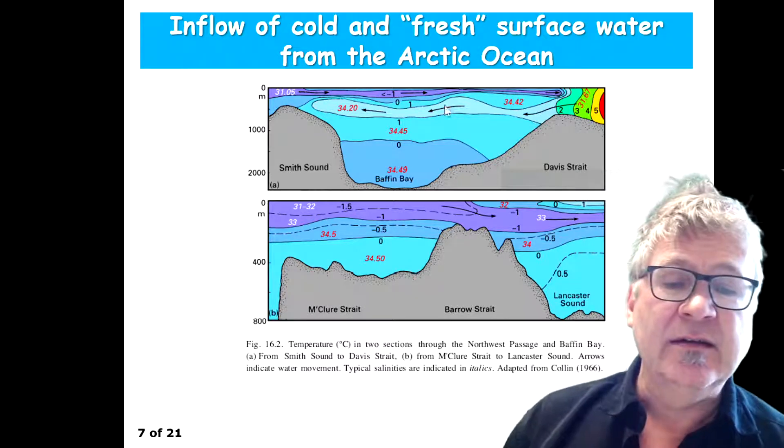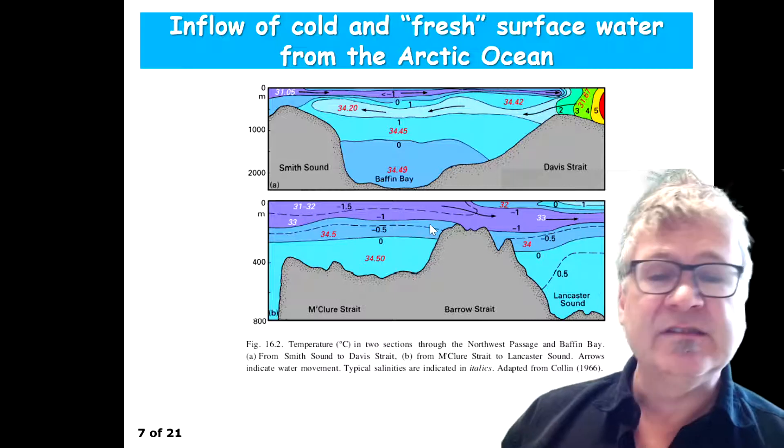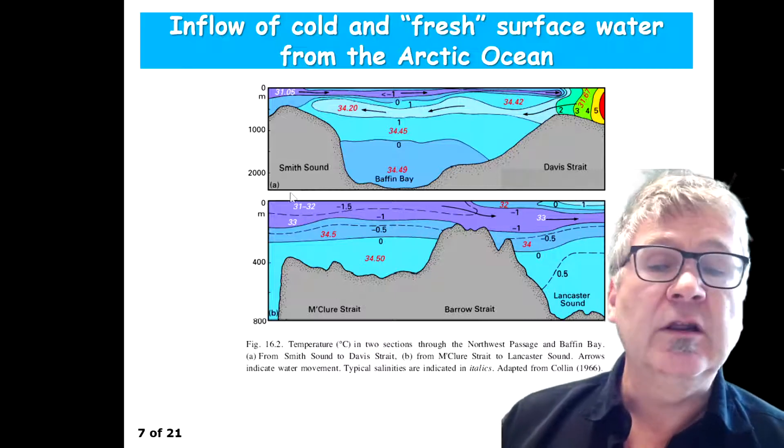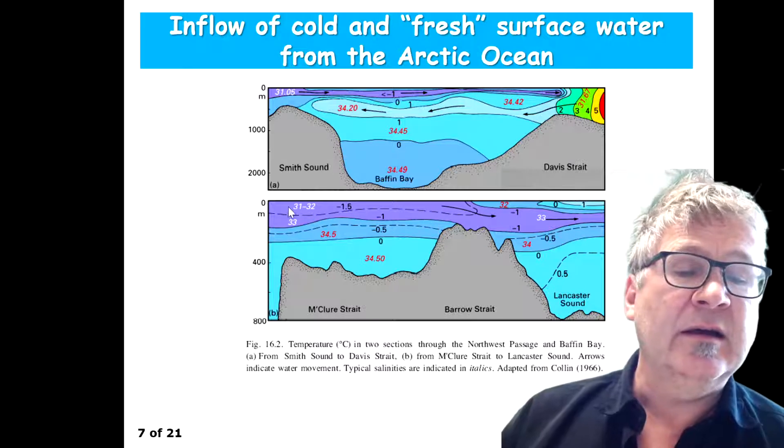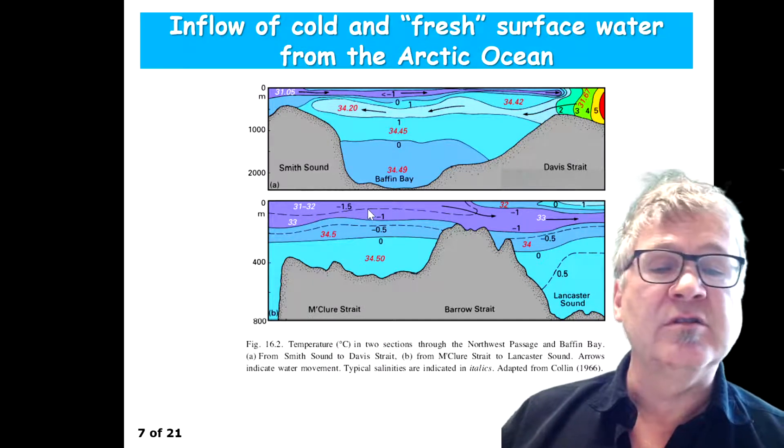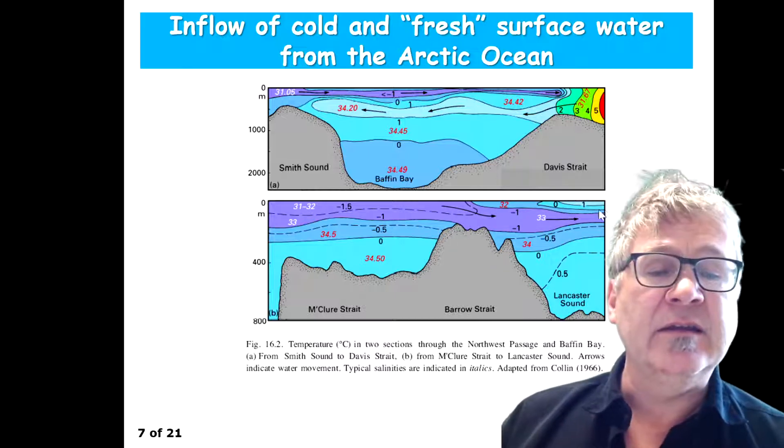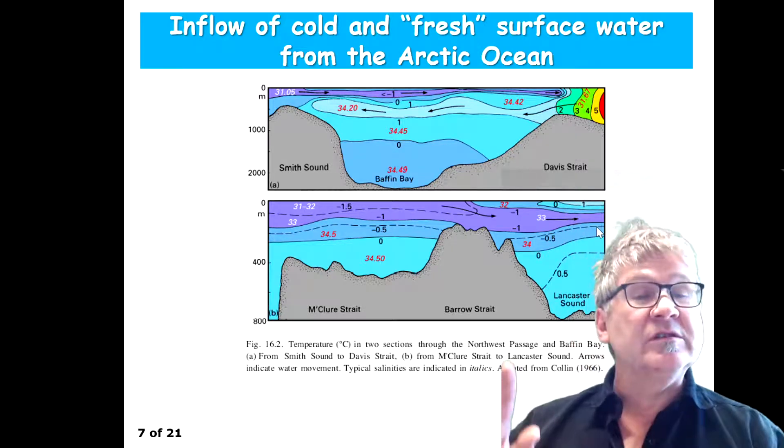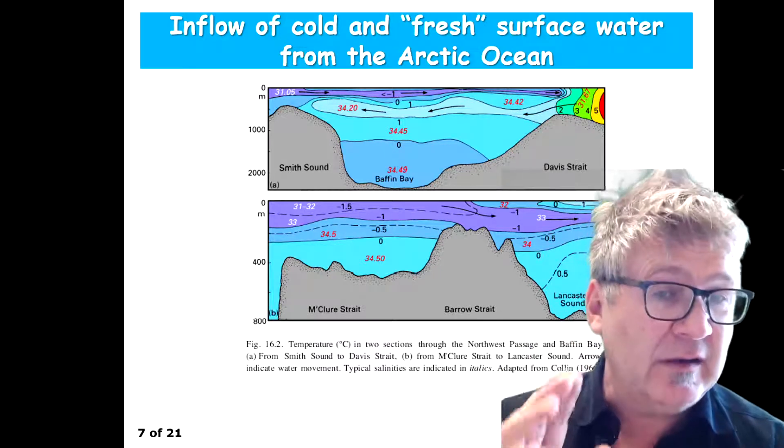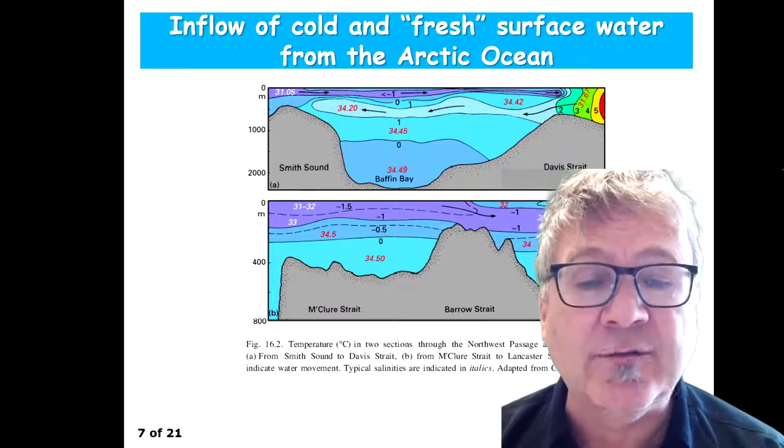And there's another example here, the Barrow Strait example. And where you can see on one side, you have very cold, low salinity surface water. And then in Lancaster Sound, it turns into a subsurface. It dives underneath a warmer layer. So these regions have fairly complex exchange flows.